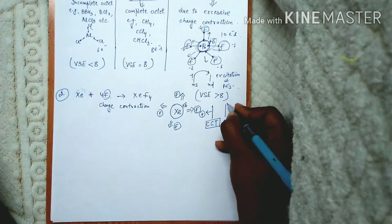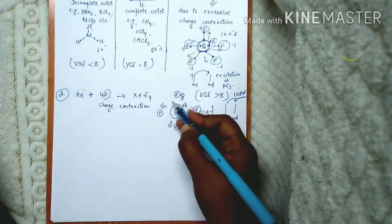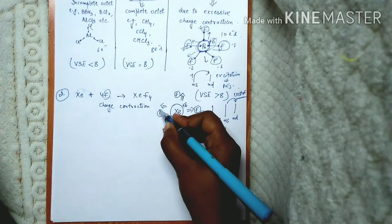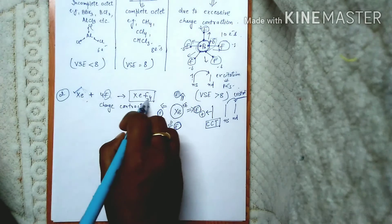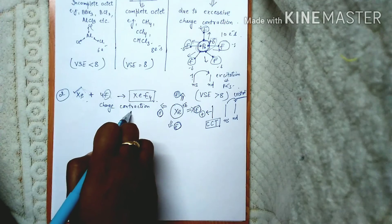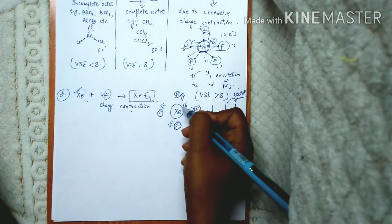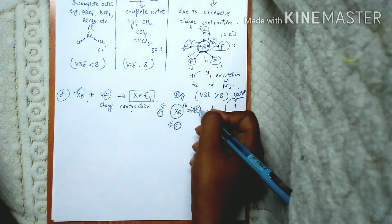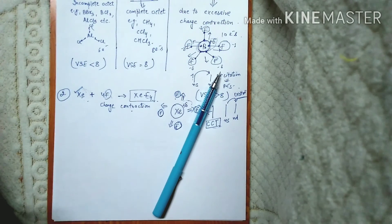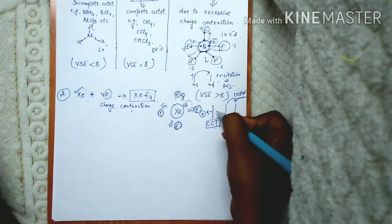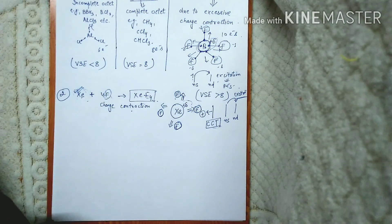When the charge is contracted, the distance between the ns and d orbitals decreases, and then excitation becomes very easy. When excitation takes place, the electrons that were paired are now unpaired and they form bonds with these four fluorine atoms — this is how XeF4 is formed. In summary, XeF4 forms even though xenon is inert because fluorine's high electronegativity causes electron withdrawal, xenon develops a delta positive charge, the valence shell contracts, excitation takes place, and the compound is formed. We will continue in the next video.